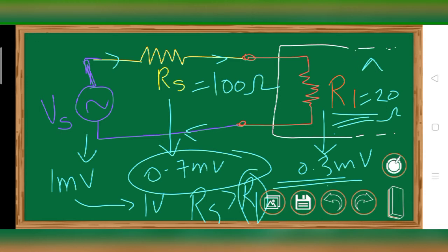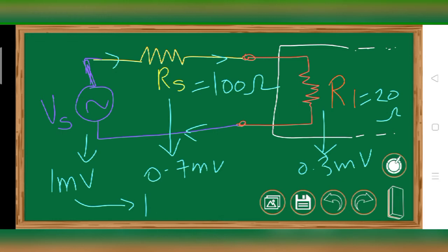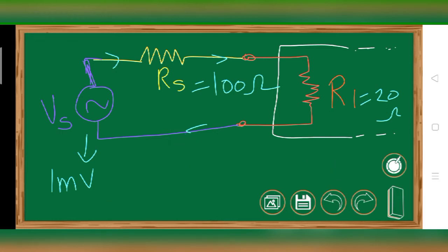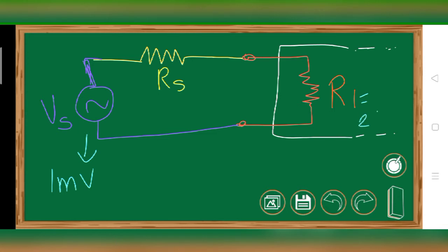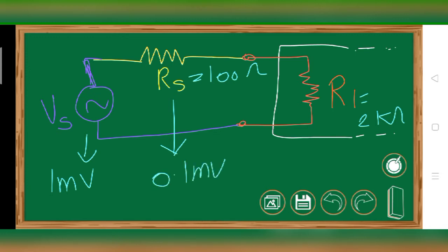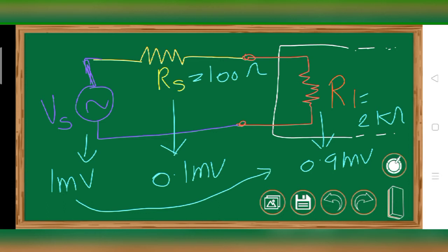Now let's look at Case 2. I'll keep R1 as 2 kilohms and RS as 100 ohms. Again applying 1 millivolt of signal — the voltage drop across RS in this case would be around just 0.1 millivolt, and the voltage drop across R1 would be around 0.9 millivolt. Together they add up to 1 millivolt. We are now transferring maximum voltage — 0.9 millivolts — to R1.